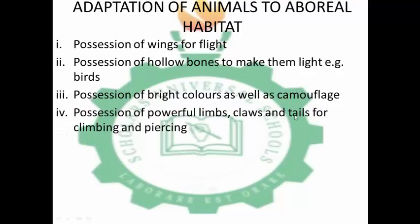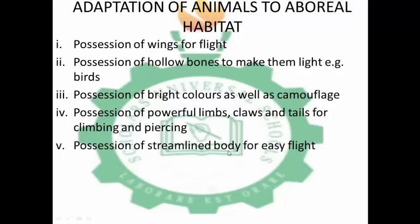Possession of powerful limbs, claws, and tails for climbing and gripping. For example, the monkey has a prehensile tail which it can use to climb, and claws which it uses to grip trees, while its powerful limbs allow it to climb tall trees. Possession of a streamlined body for easy flight — birds possess a streamlined body to reduce friction between their body and air so that they can fly.